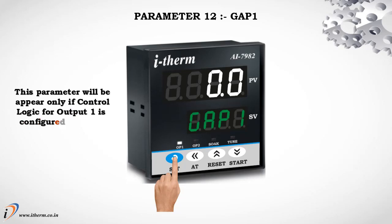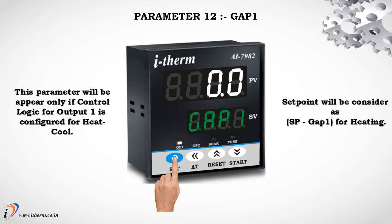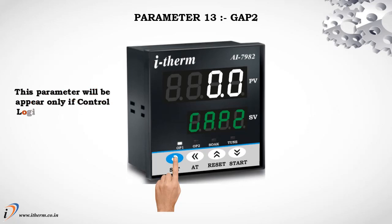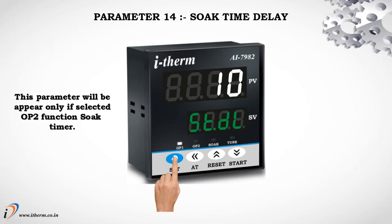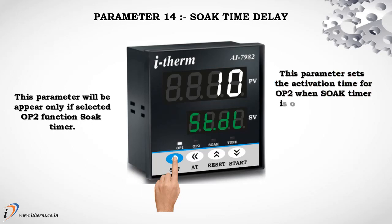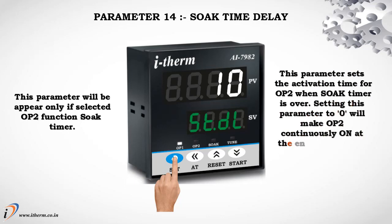Parameter 12: Gap 1. This parameter will appear only if control logic for output 1 is configured for heat-cool. Set point will be considered for heating. Parameter 13: Gap 2. This parameter will appear only if control logic for output 1 is configured for heat-cool. Set point will be considered for cooling. Parameter 14: Soak time delay. This parameter will appear only if selected output 2 function is soak timer. This parameter sets the activation time for output 2 when soak timer is over. Setting this parameter to 0 will make output 2 continuously on at the end of soak time until user starts the next cycle.